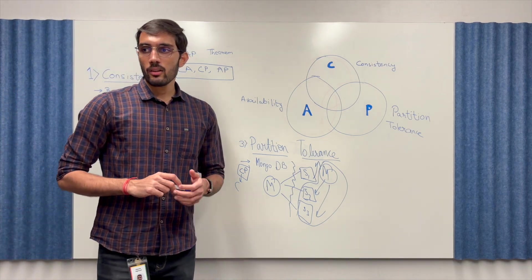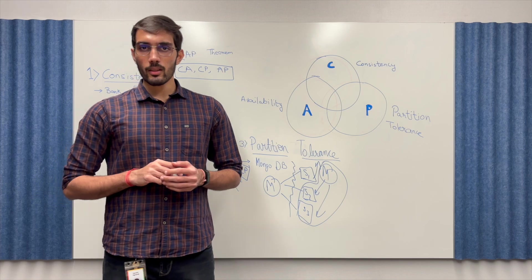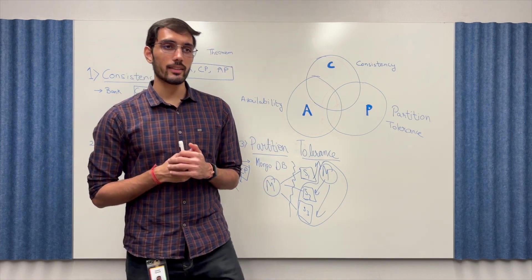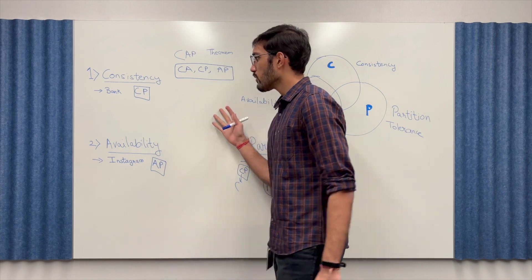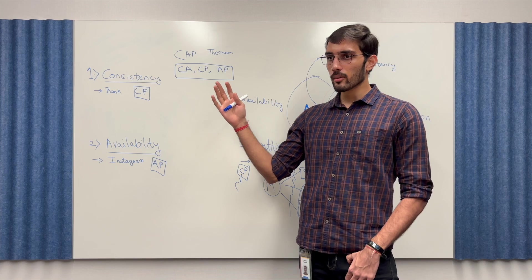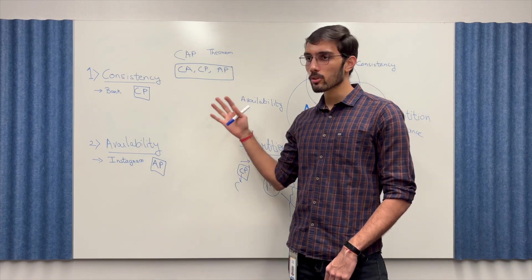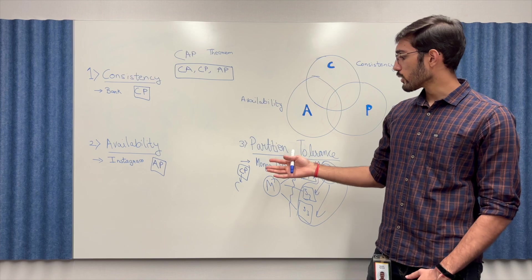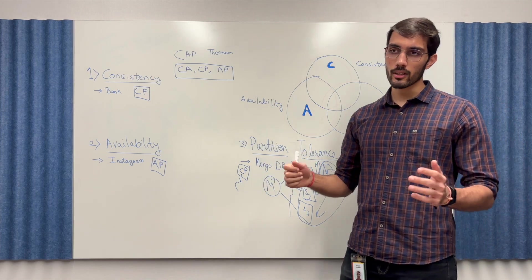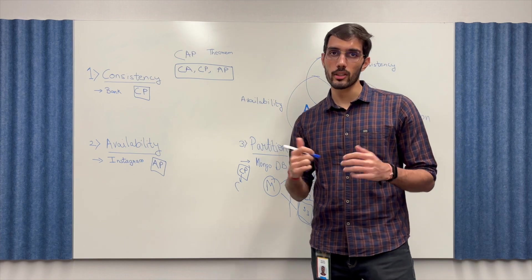So how do I decide which one to use which two of these properties to prioritize? So that depends on the needs of your application as I mentioned you need to understand what you're trying to build is consistency and partition tolerant important to you or do you want your system to be highly available or do you also want your system to be partition tolerant from any sort of problems that might occur in the network between the distributed nodes?